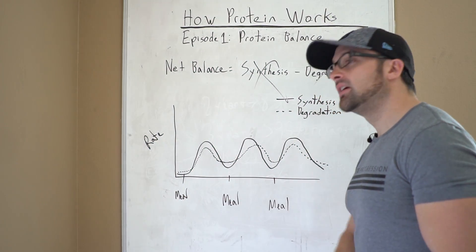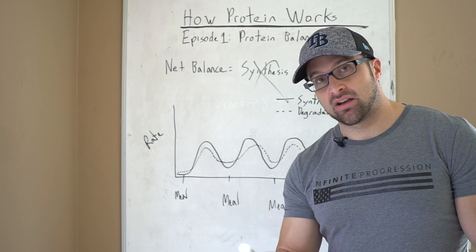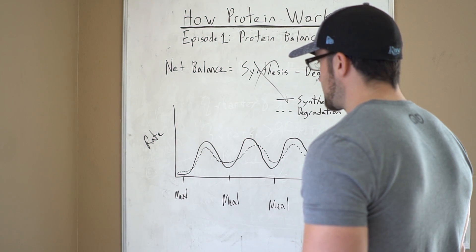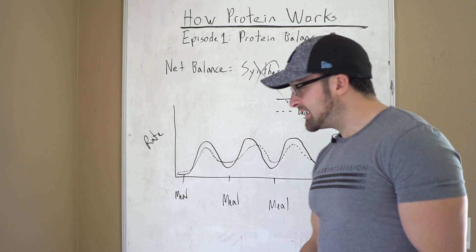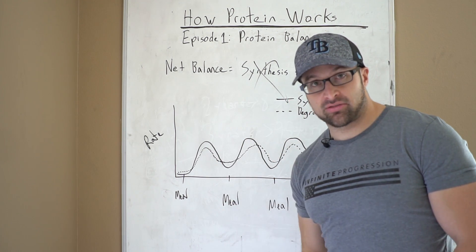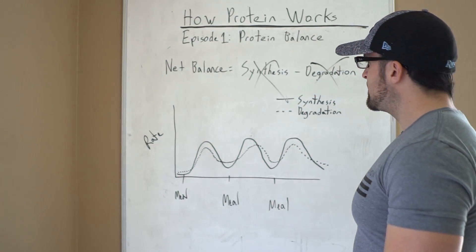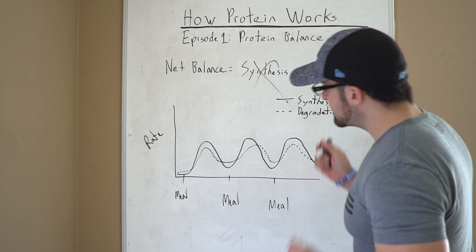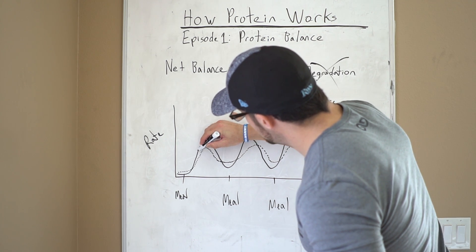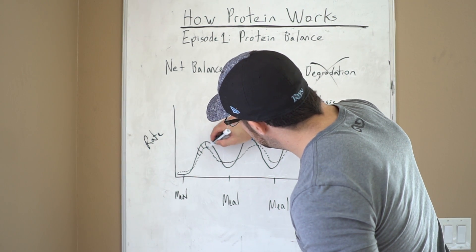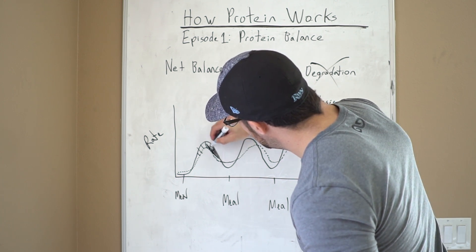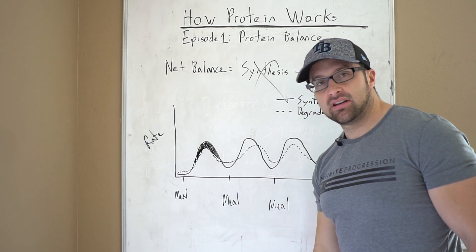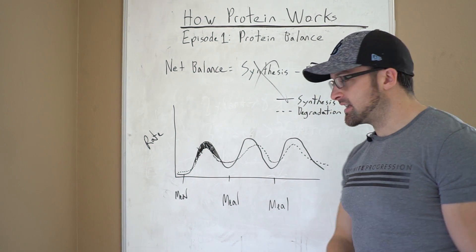When you eat a meal, assuming it contains sufficient protein and of sufficient quality, you get an increase in the rate of muscle protein synthesis. Now notice degradation, this hash line also increases when you eat food. Now wait a minute. I thought you said food was anabolic. How? Well, yes, both increase. Notice that the rate of synthesis is exceeding the rate of degradation. So your area under the curve here is in a positive net balance. Synthesis exceeding degradation.